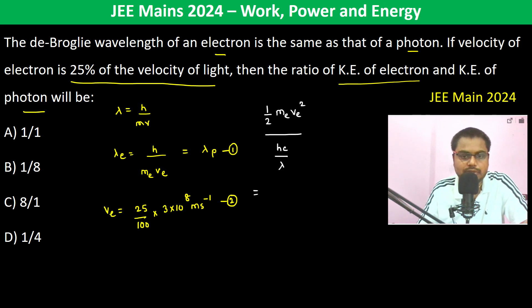Let us solve this. This is equal to half m_e v_e squared over hc by lambda. We can see here h by lambda is m_e v_e, so I'm writing m_e v_e and multiply it by c. Therefore m_e is gone, v_e is also gone.